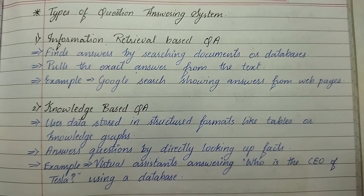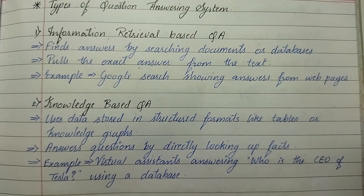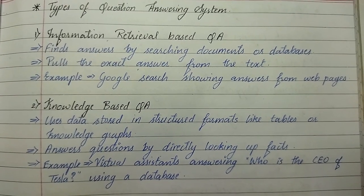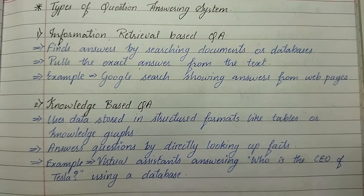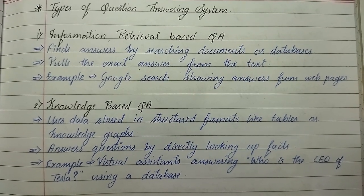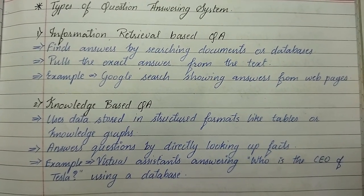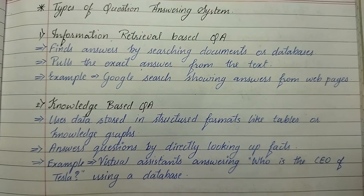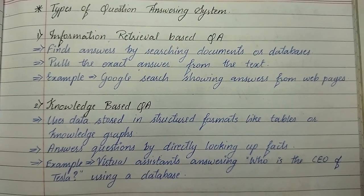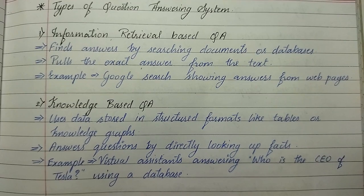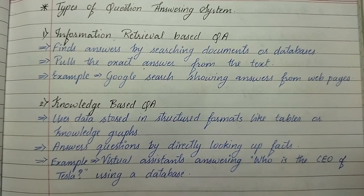Now we'll see the types of question answering systems. First is information retrieval-based question answering — it finds answers by searching documents or databases and pulls the exact answer from the text. An example is Google Search showing answers from web pages.